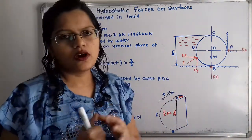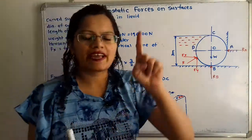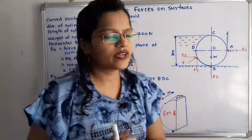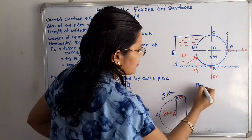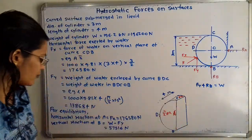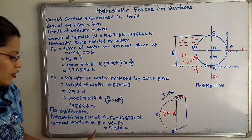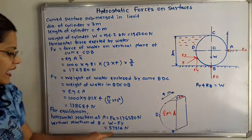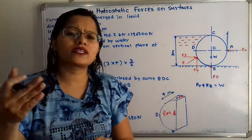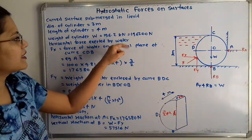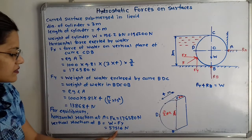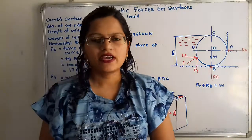Balancing vertical forces: FY acts upward, RB acts upward, and W acts downward. So FY plus RB equals W. Therefore RB = W − FY. The weight W is given as 196.2 kilo Newton, which equals 196,200 Newton. Calculating: RB = 196,200 − 138,684 = 57,516 Newton. This is the final answer for the vertical reaction at point B.